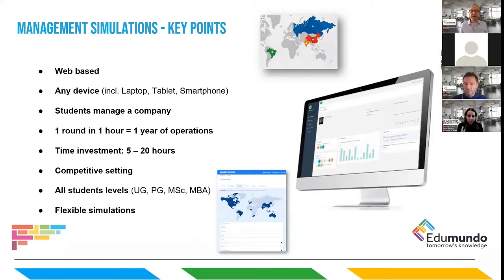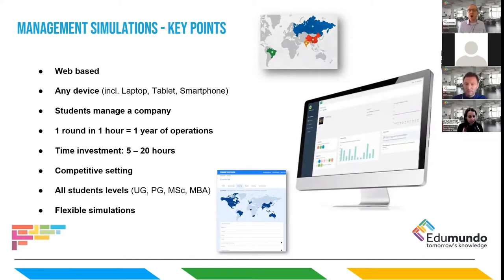Students work in teams of usually three, four, or five to manage a company. They take over an existing company, undertake external analysis, decide on strategic direction, and then take tactical decisions to propel their company forward. Typically one round represents one year of operations, scheduled across a semester — one round per week of study, though some intensive simulations run during induction events or MBA residentials. Time investment is flexible depending on the course level.